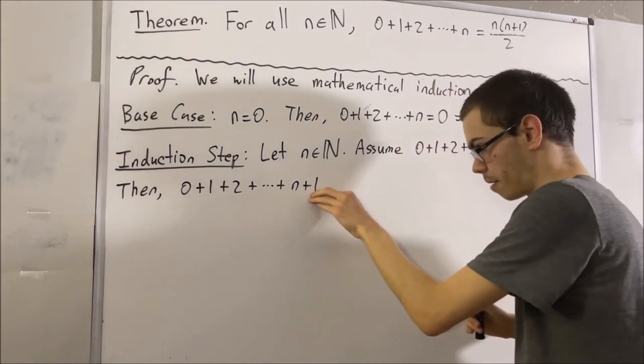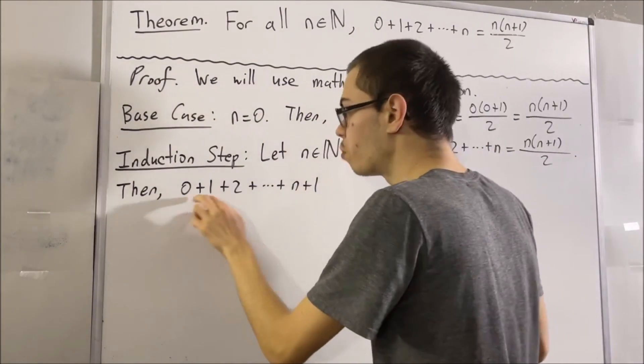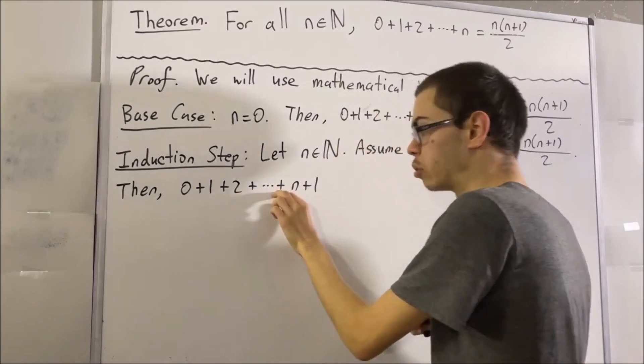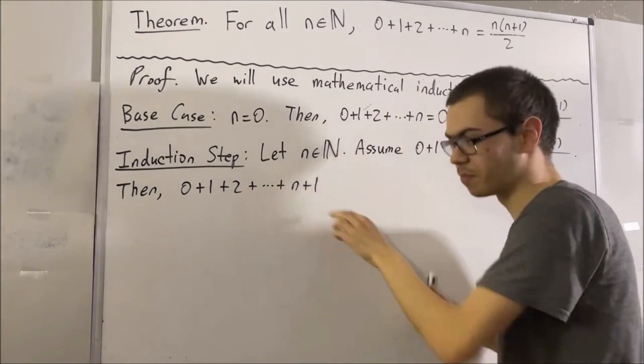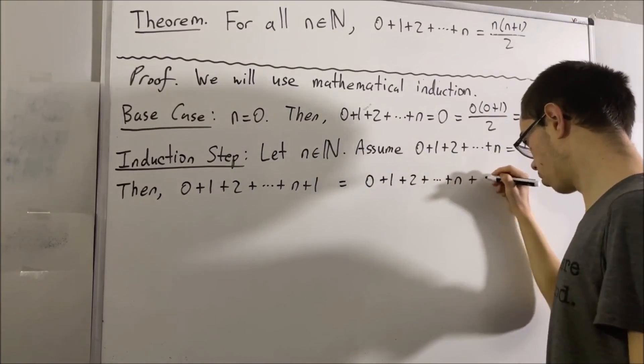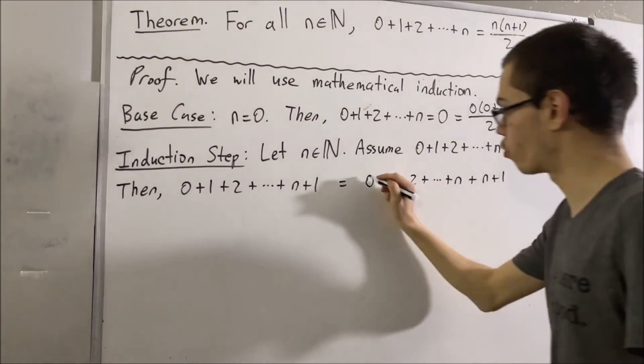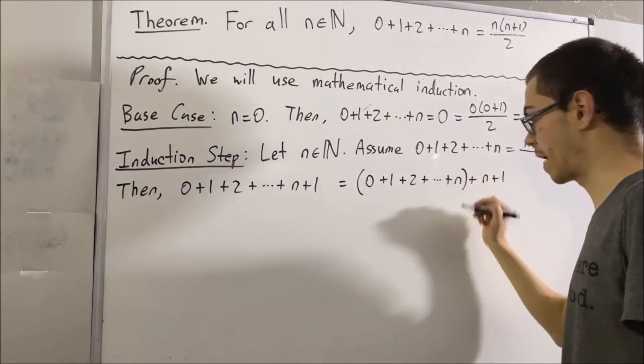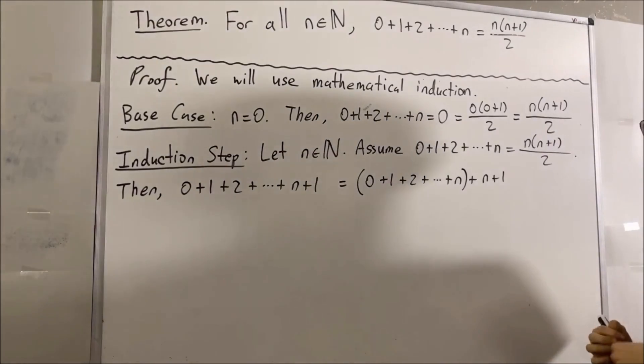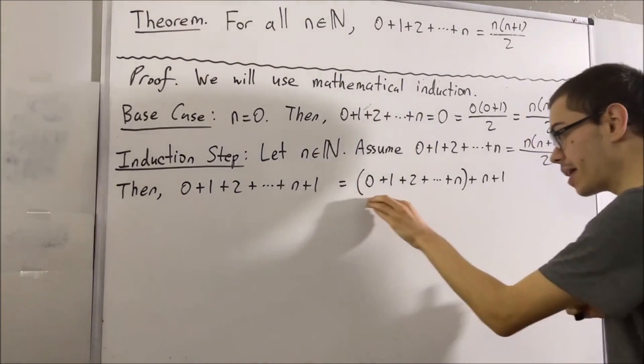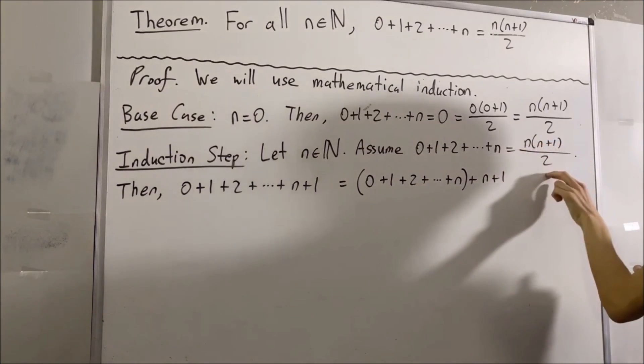Now, really, we can take this sum and rewrite it as 0 plus 1 plus 2 plus dot dot dot plus n plus n plus 1. And I'm actually going to put parentheses between the 0 and the n. The reason why is because this parentheses is equal to n times n plus 1 over 2.